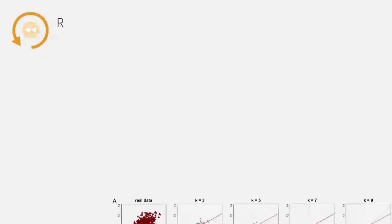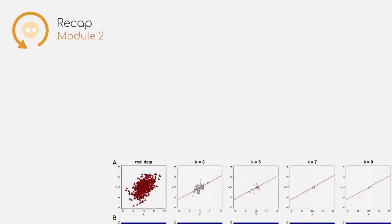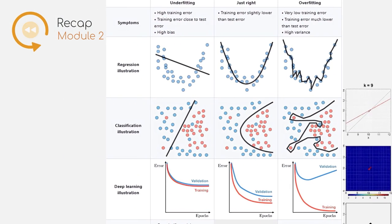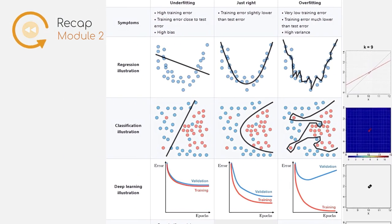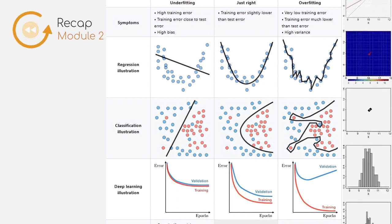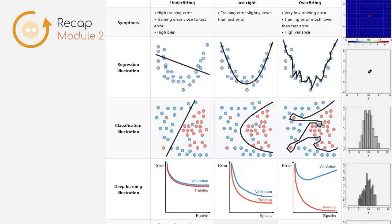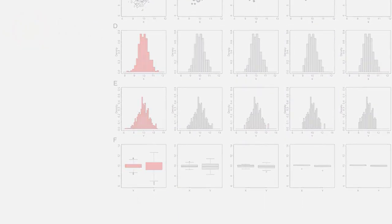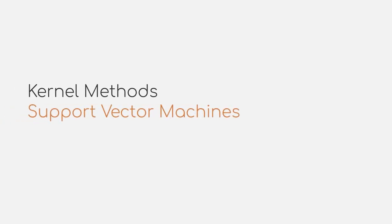In Module 2, we have spent quite some time on understanding what data is about and what data can look like. Additionally, we also covered the concept of supervised learning, where we discussed that we want to separate different classes from each other to classes in case the task is binary. Now, all of this is important for this module, where you will learn about kernel methods and the so-called support vector machines.